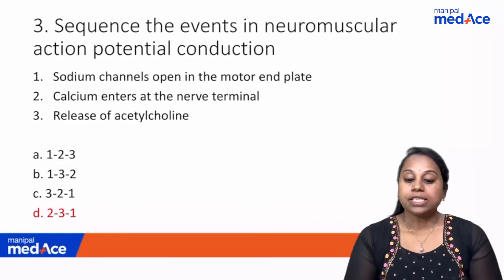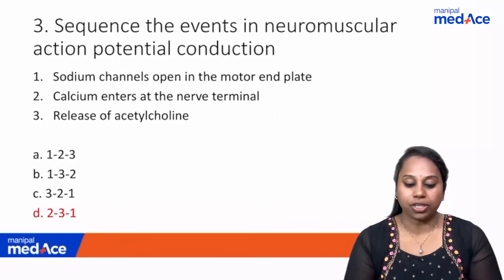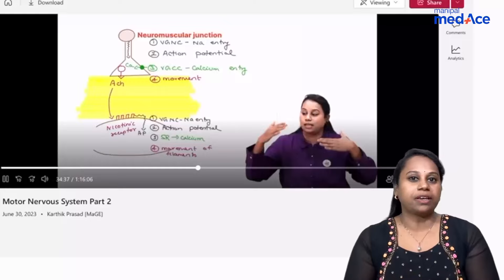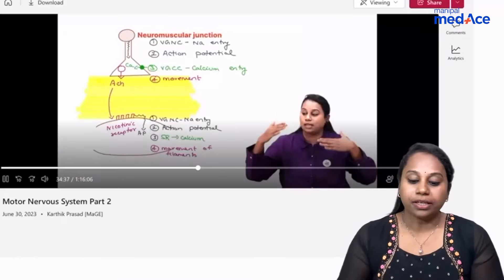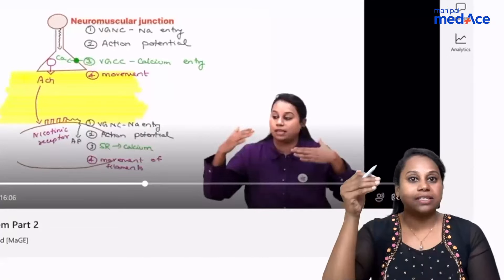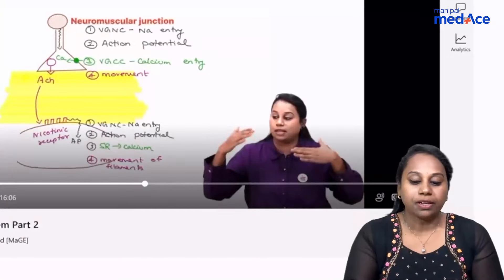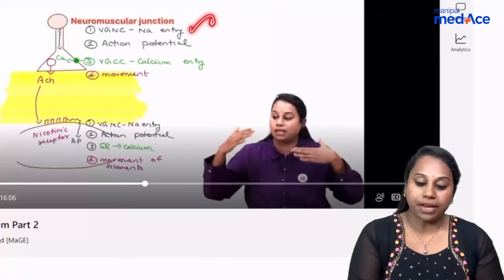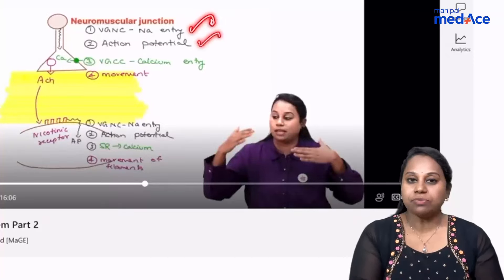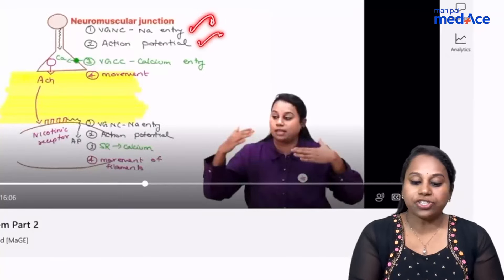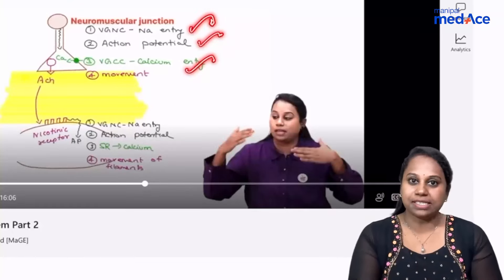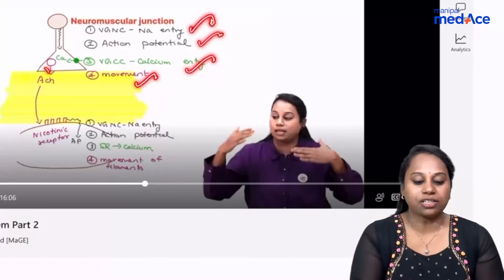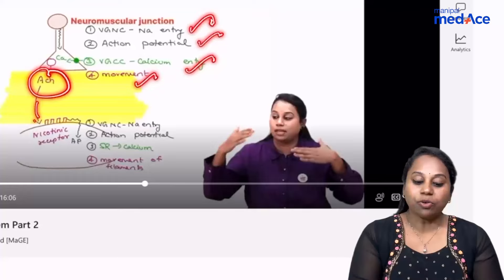Question 3: Sequence the events in neuromuscular action potential conduction. The first step is voltage-gated sodium channels opening in the nerve, causing sodium entry and action potential. This action potential triggers the opening of calcium channels in the nerve, and this calcium causes movement of vesicles to release the neurotransmitter acetylcholine.